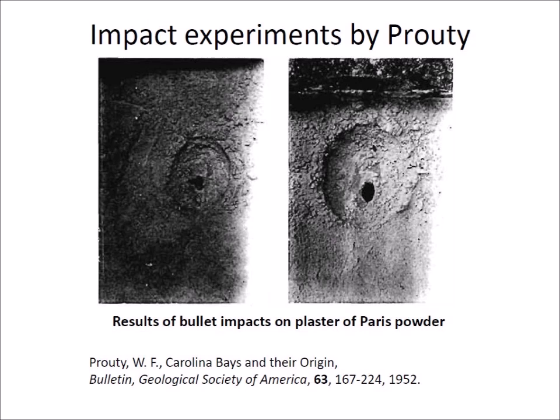It was only in 1952 when William Prouty conducted experiments to test the impact hypothesis. Prouty fired a high-powered rifle at a powdery target to produce somewhat elliptical depressions. These images show the results of bullet impacts on plaster of Paris powder spread over the bottom of a tray. Prouty also experimented using flour instead of plaster of Paris. He obtained the same general effect by having a layer of modeling clay spread over the bottom of the tray and a layer of plaster of Paris above it.